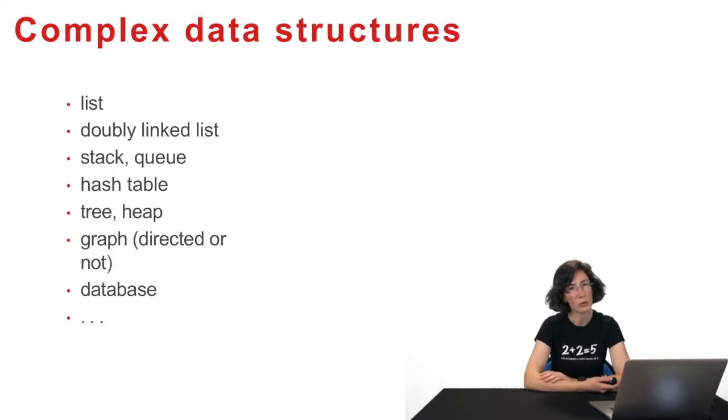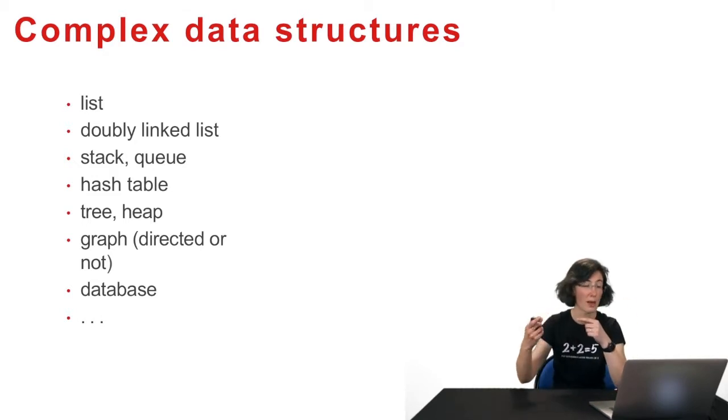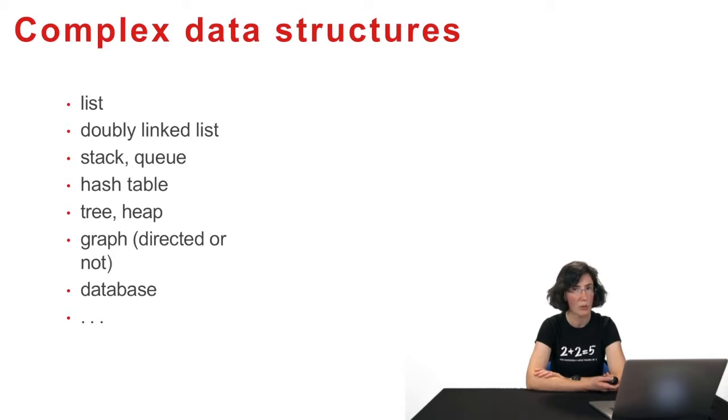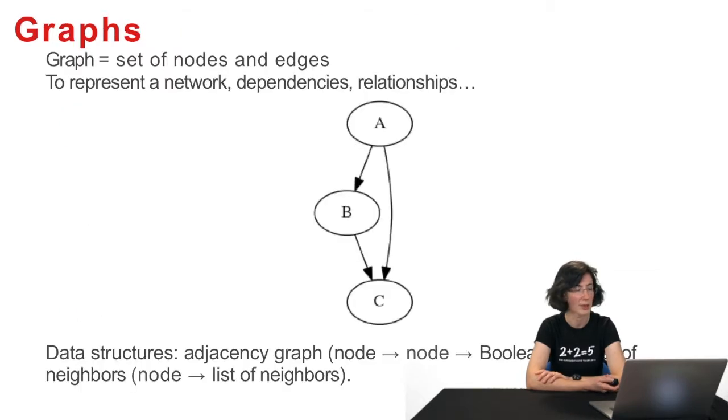Particularly concerning data structures, there are many much more complex structures existing in computer science. I'll give you a non-exhaustive list. There are the lists Bryce talked about in the data organization sequence. More complex, doubly linked lists, where there are links from one to the next, but also to the previous. The stacks and queues that are especially used to store tasks to carry out. Hash tables to represent sets. Trees and heaps that are more complex structures but with many underlying structures. The graphs I'll talk about a bit later. And the databases on which you also have a sequence.